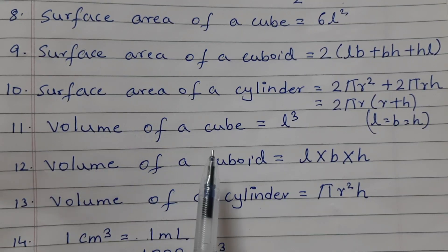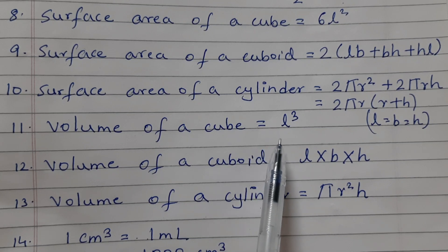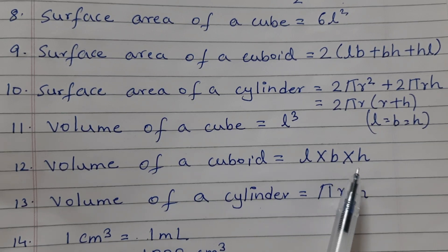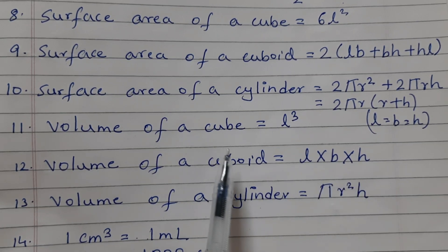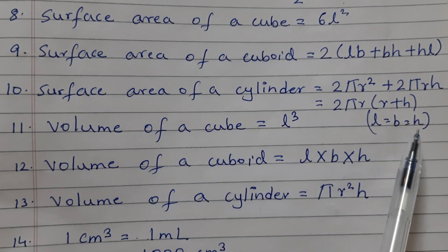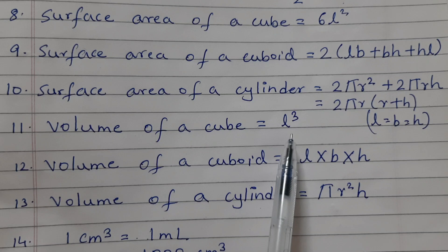Volume of a cube is equal to L cubed. Volume of a cuboid is equal to L into B into h. Cube is a special case of cuboid where the length is equal to breadth is equal to height. That's why it's L cubed.